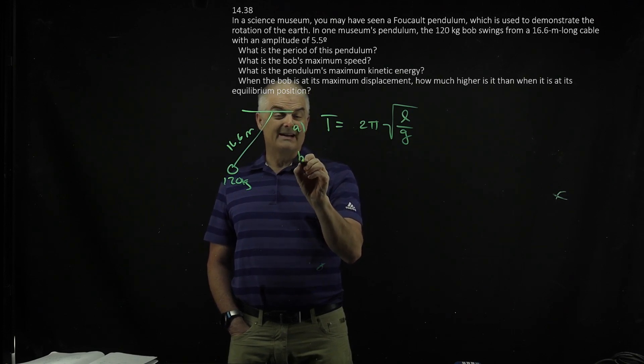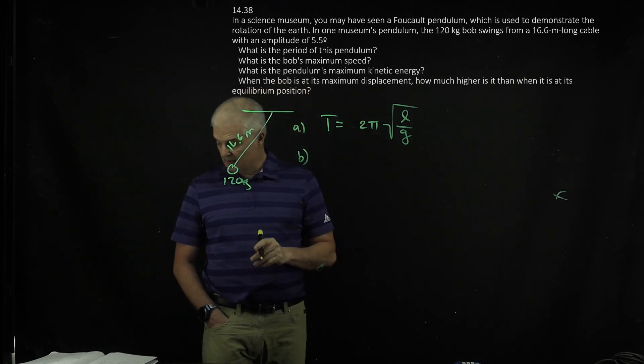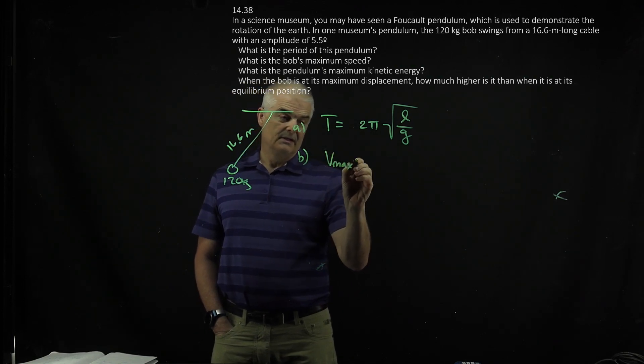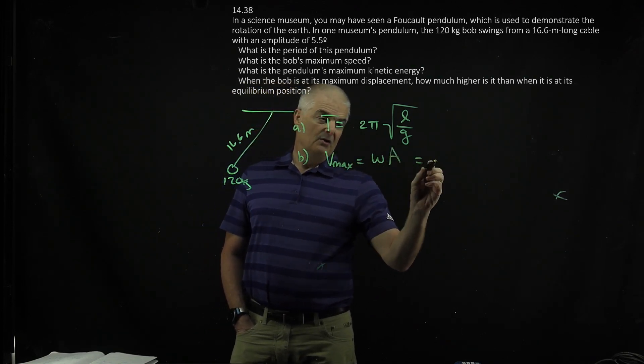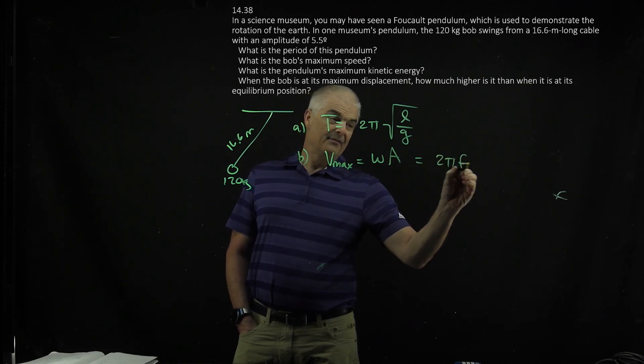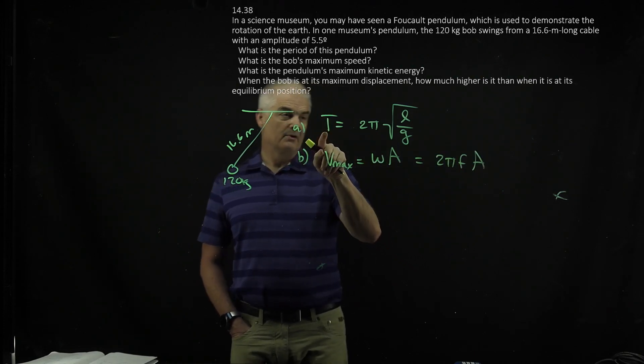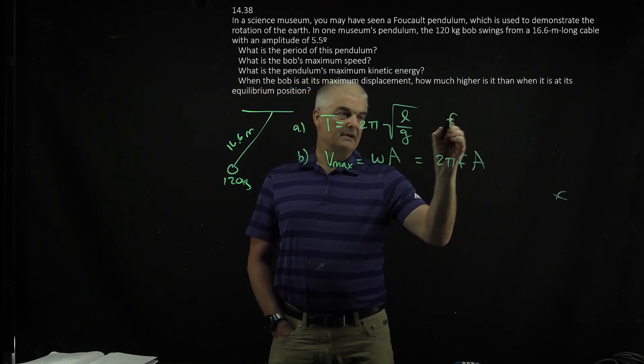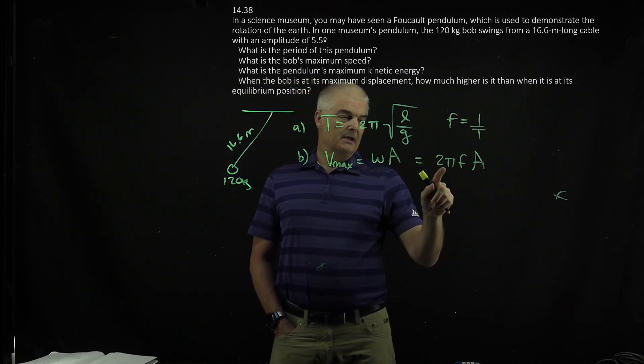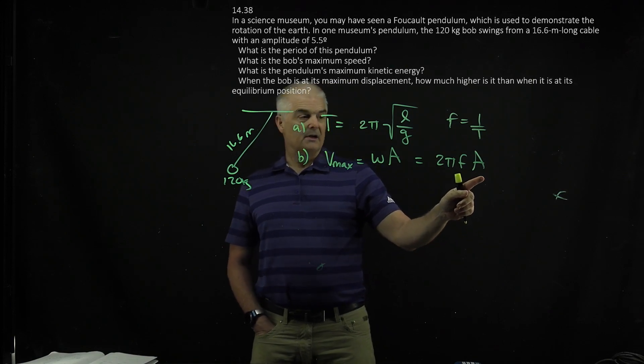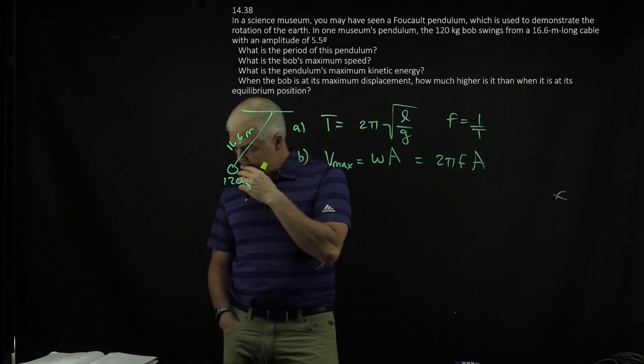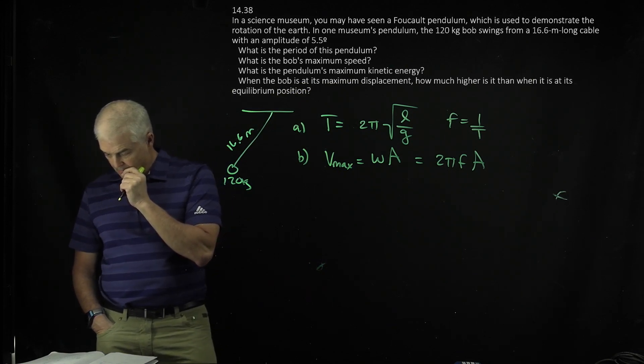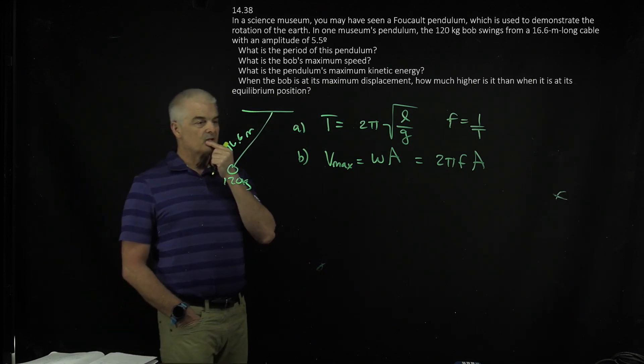What's the bob's maximum speed? We're ramping up our question. If you recall, Vmax is equal to ω times A, or that's 2πfA. So once you know the period, you can convert. Remember F is 1 over the period. And then you can know the amplitude of the wave. Now how do we know the amplitude of the wave? That's the tricky question, isn't it? So how do you find A?